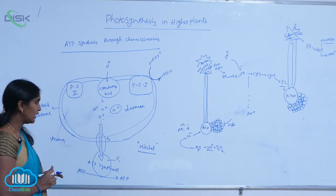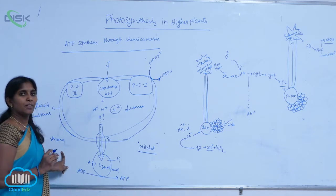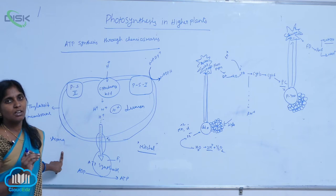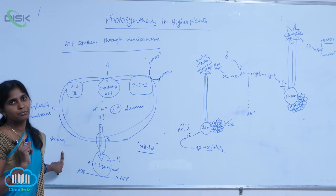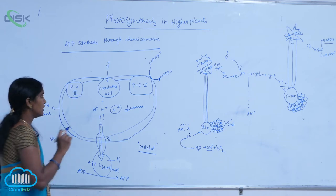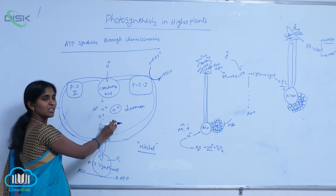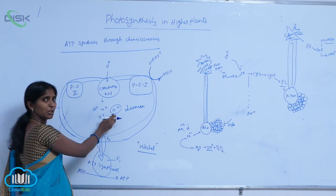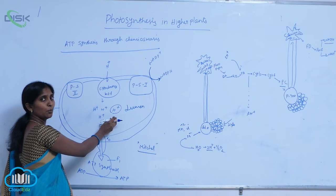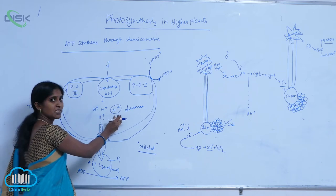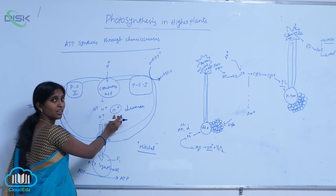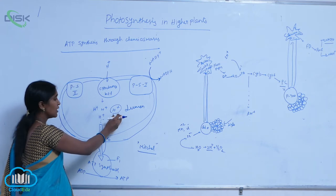As a result, a scarcity of protons occurs in the stroma. Meanwhile, proton concentration increases in the lumen as they accumulate inside. This creates an increased proton gradient.